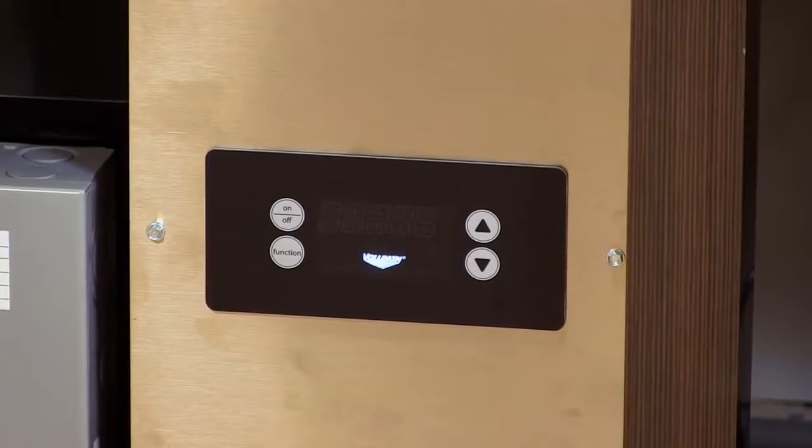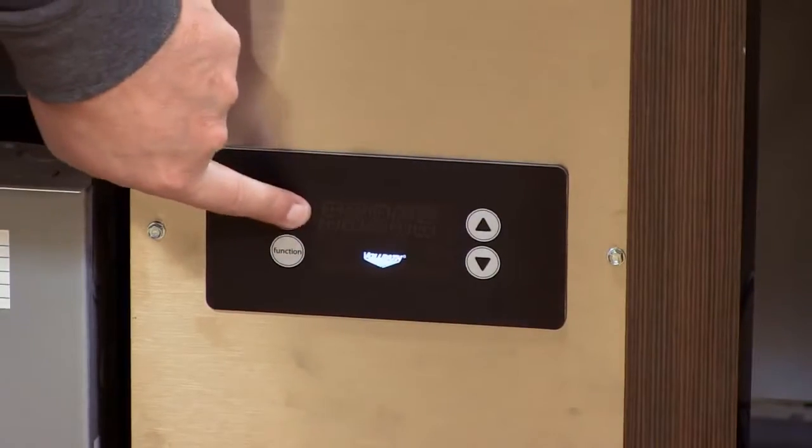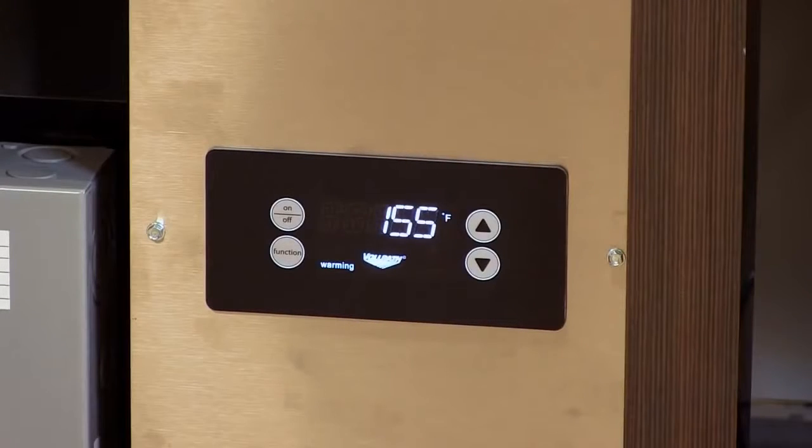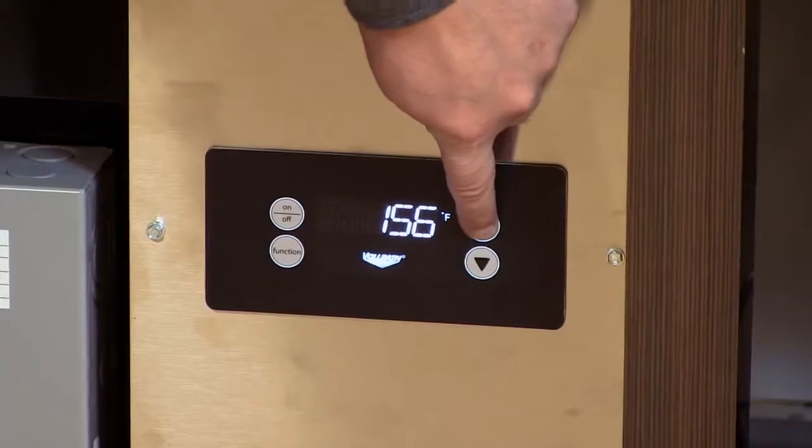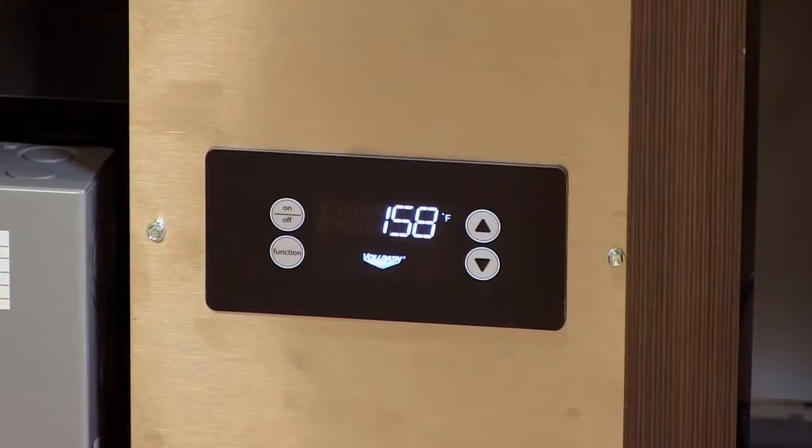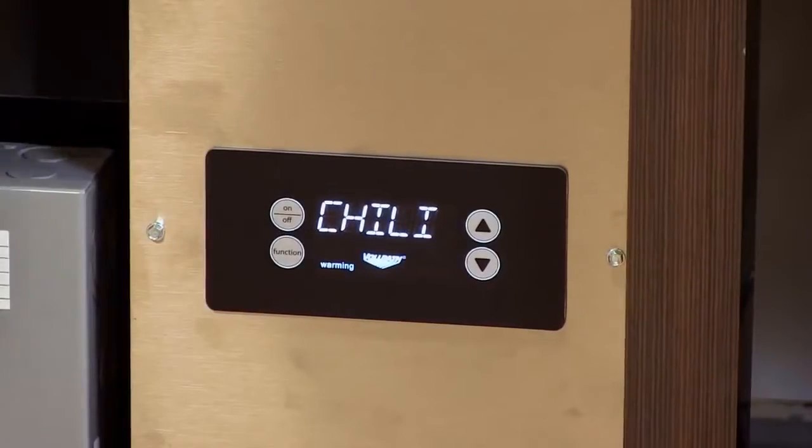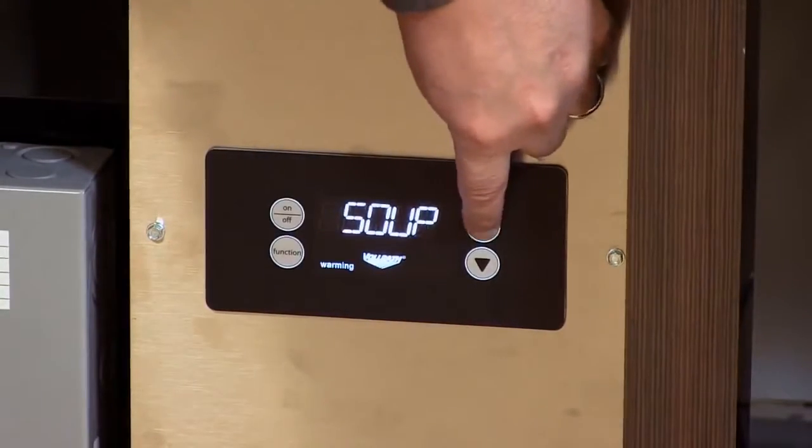The function of the induction drop-ins is very simple. You turn the unit on, and it's set to 155 degrees Fahrenheit. You can scroll up or down to set the temperature you'd like. Press the function button and it shows Celsius. Press function again and there are presets for popular food items.